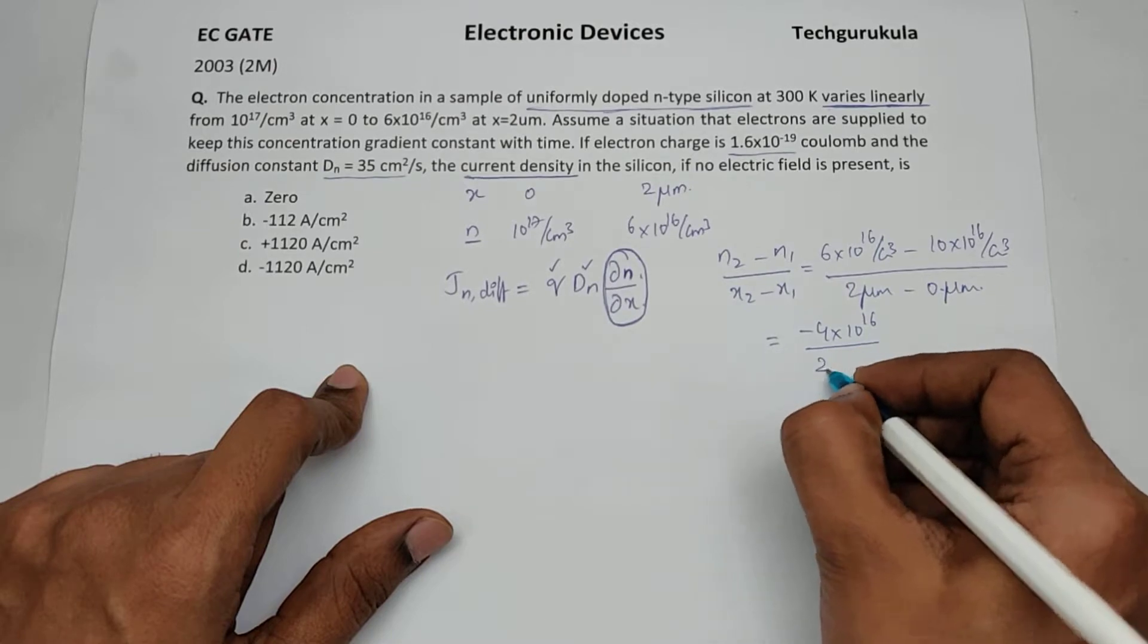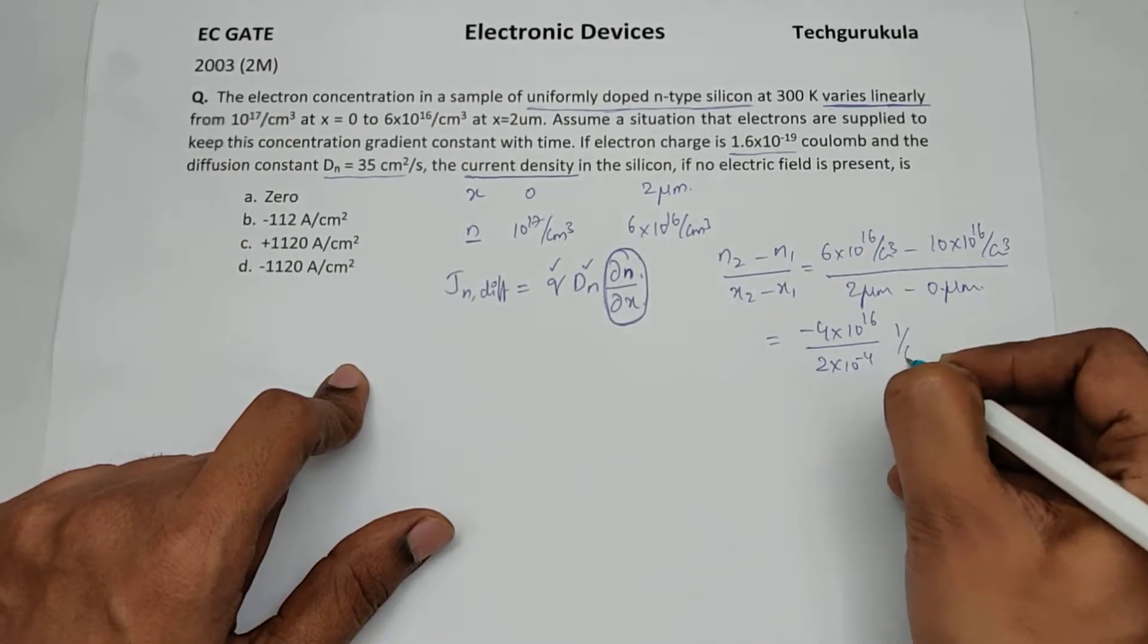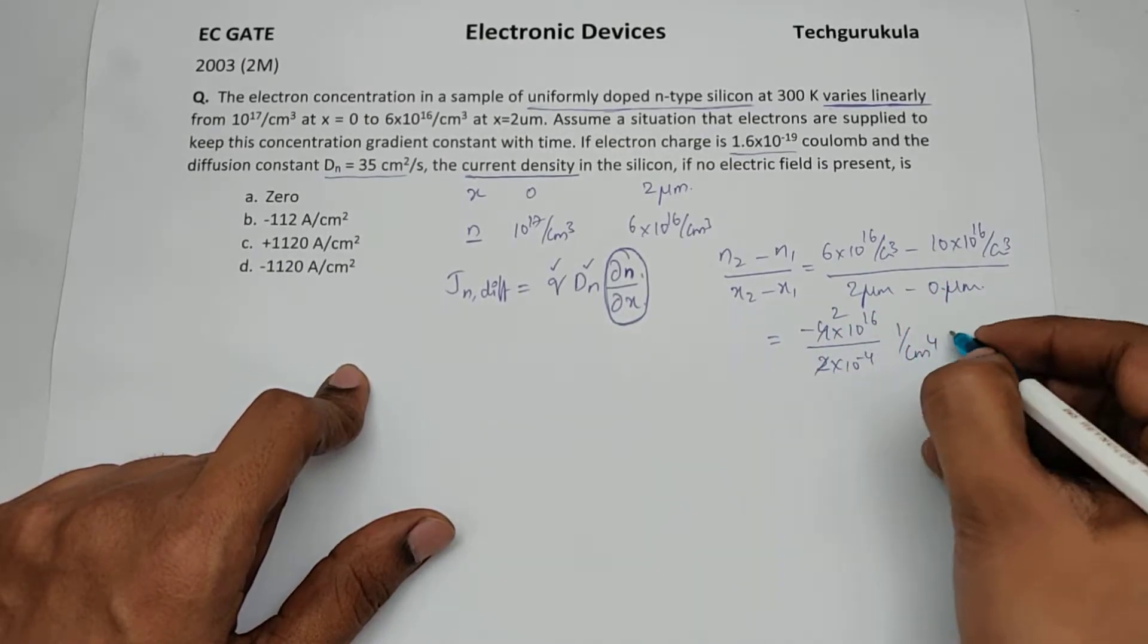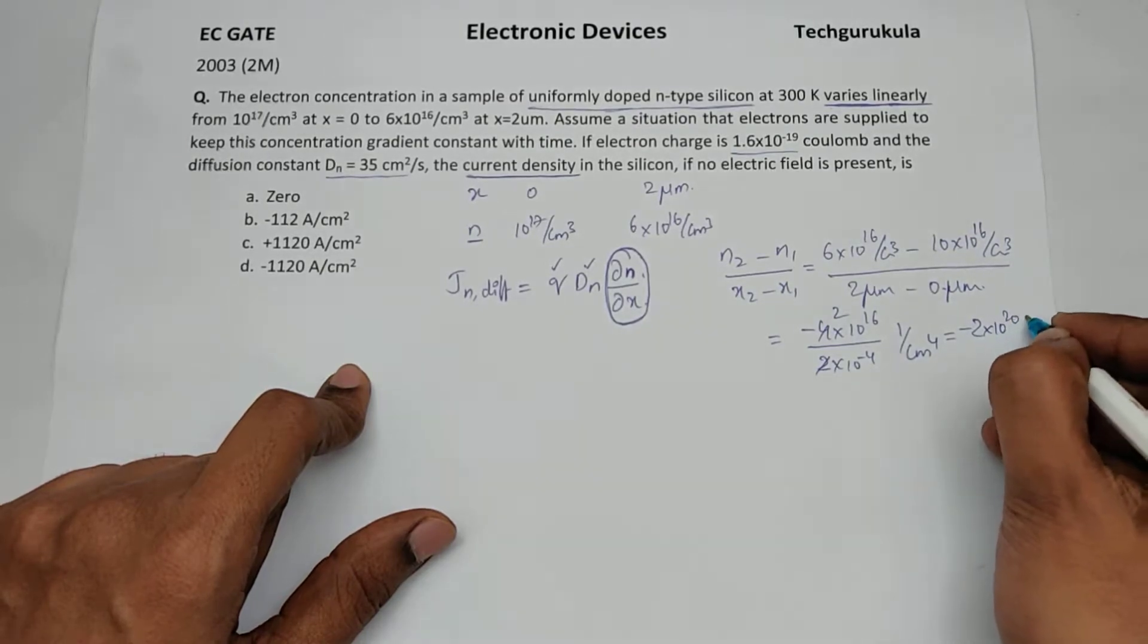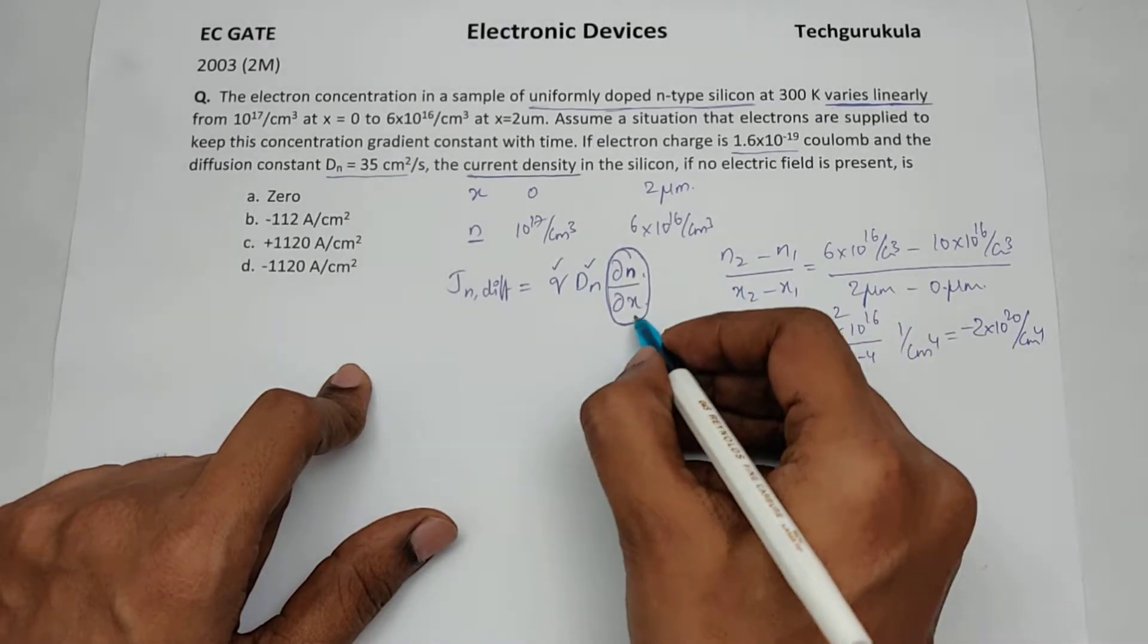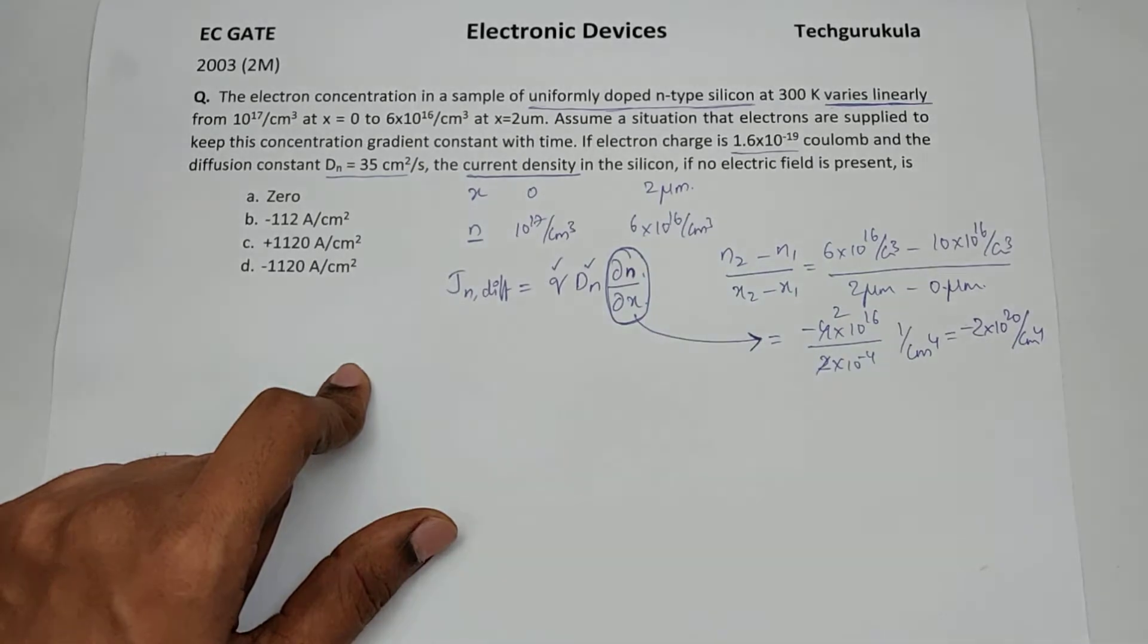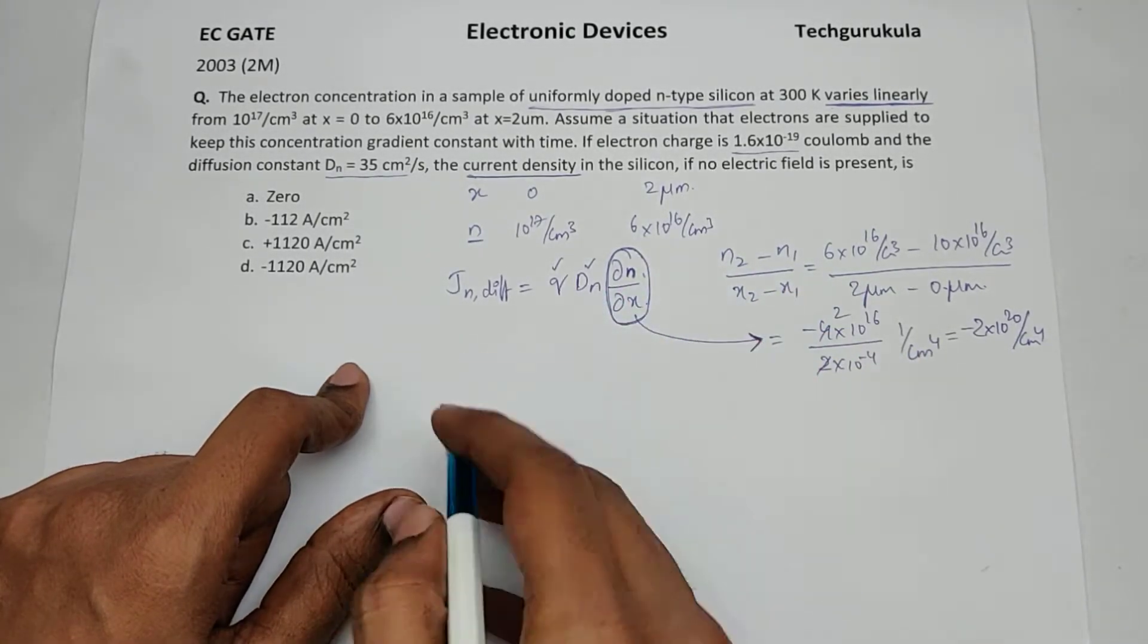Now I will convert this 2 micrometers into centimeters. This becomes minus 2 times 10^16 divided by 2 times 10^-4 cm, which equals minus 2 times 10^20 per cm^4. This will be equal to del n over del x, the partial differentiation of n with respect to distance. Now we know all three quantities.